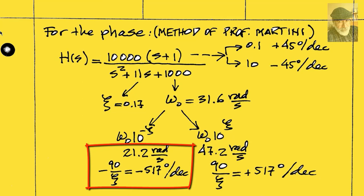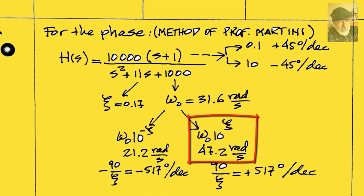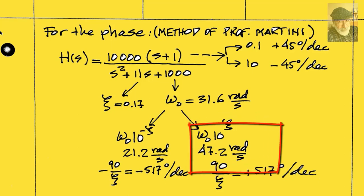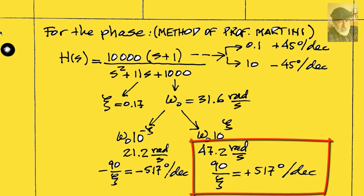And another corner at 10 to the positive zeta times omega knot, with opposite slope contribution, 31.6 radians per second, right? With plus 517 degrees per decade.